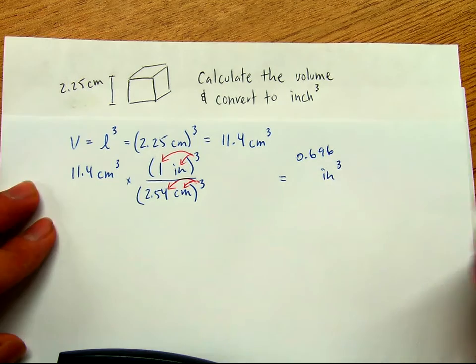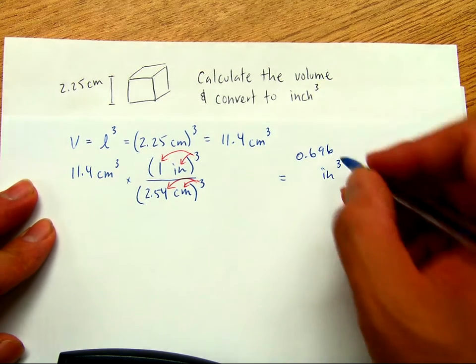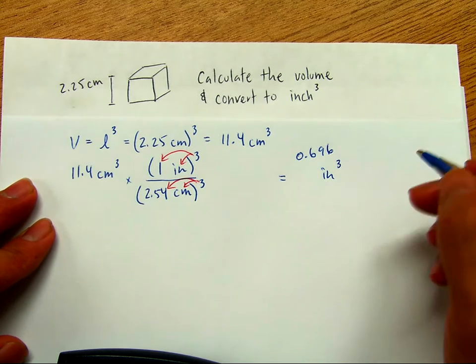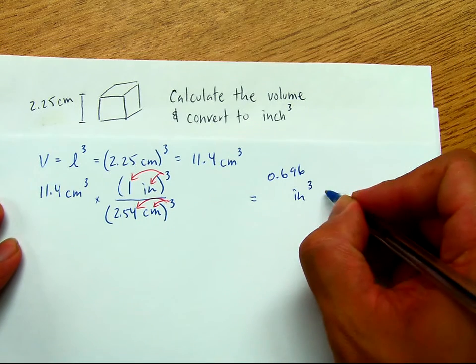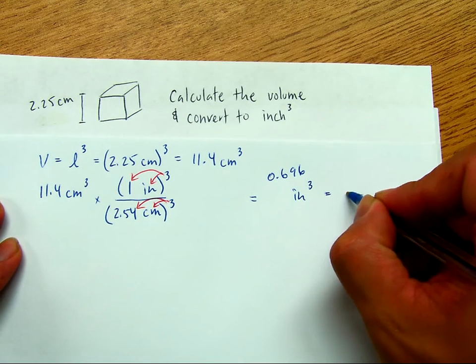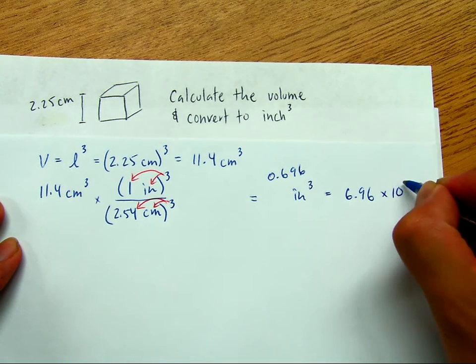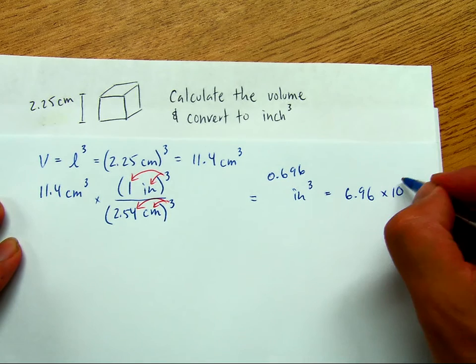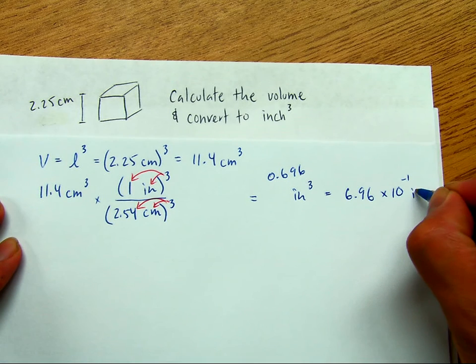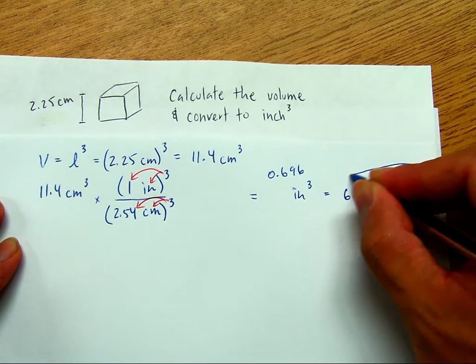Okay? So, next, you want your answer in scientific notation. So, this is the same as 6.96 times 10 to the negative 1 inch cubed. So, your answer.